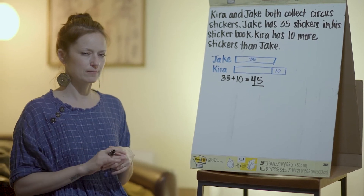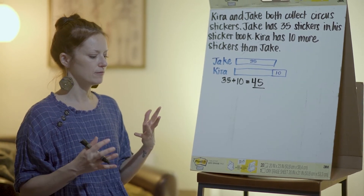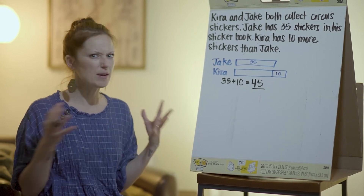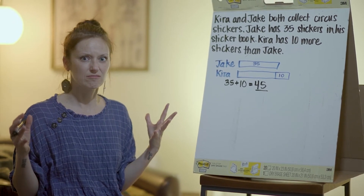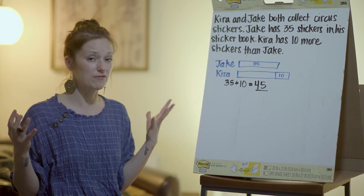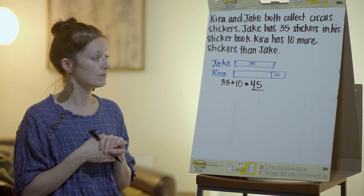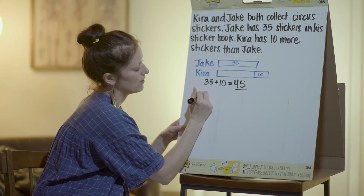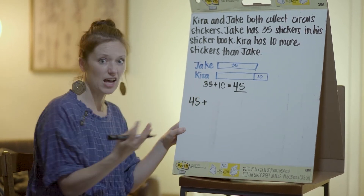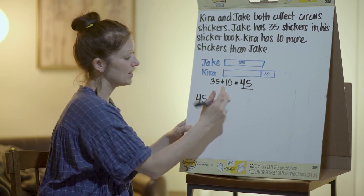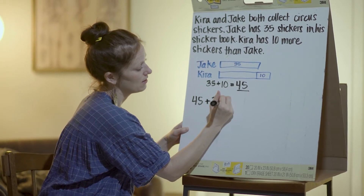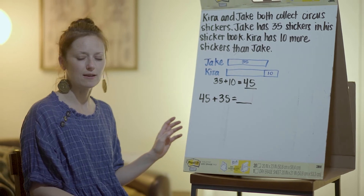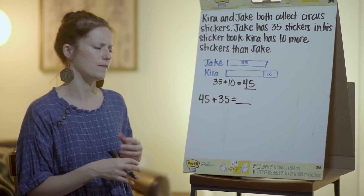So I'm going to ask you another question: what if Kira and Jake put their stickers together? How many would they have all together? What equation could I write to figure that out? Well, Kira has 45 stickers, and we're going to add them together with Jake's 35 stickers — so we need to figure out how many they have all together.